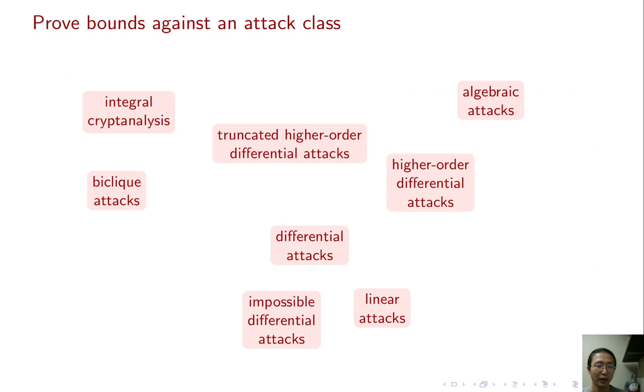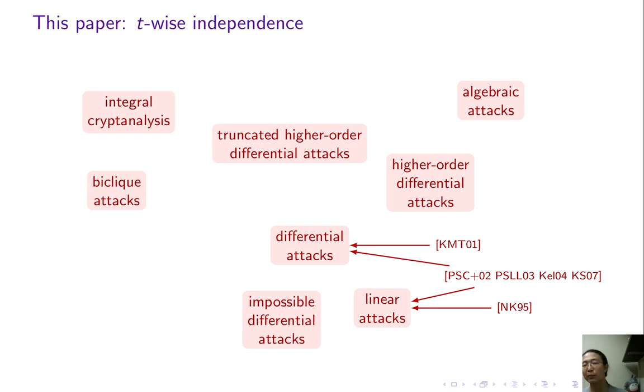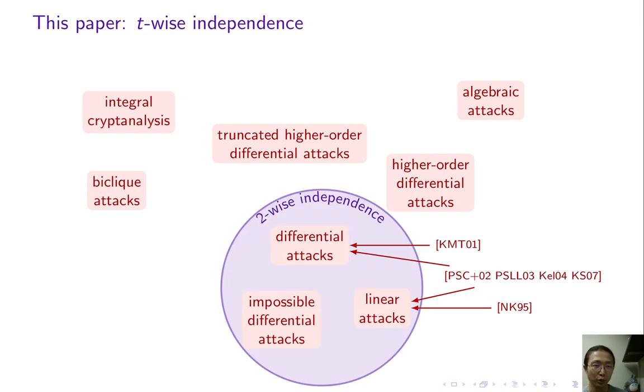To show this in a picture, the community has already identified many classes of attacks. Previous work shows AES can resist some certain classes of attacks to some extent. In this paper, we promote the study of t-wise independence, which is the desired property of block ciphers. When T equals 2, it already implies resistance to several known attacks, including linear and differential attacks.